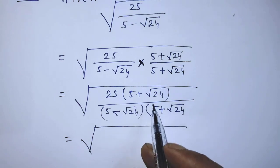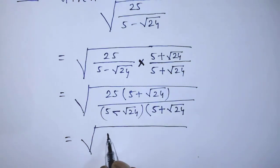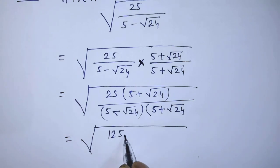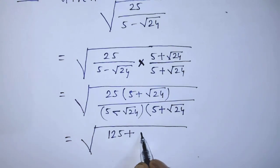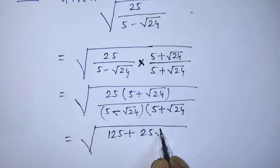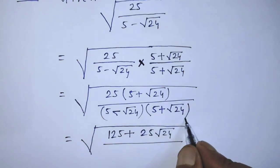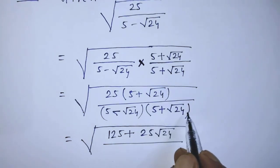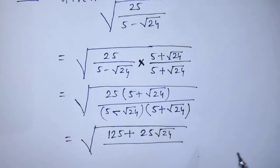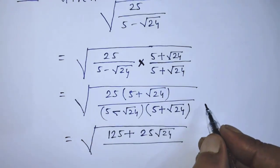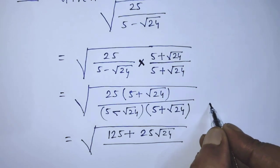Under this square root, in the numerator we get 125 plus 25 times square root of 24. To simplify the denominator of this algebraic expression, we apply the formula (a minus b)(a plus b) equals a squared minus b squared.